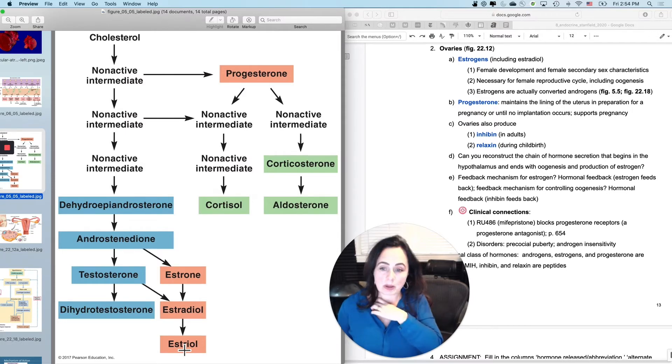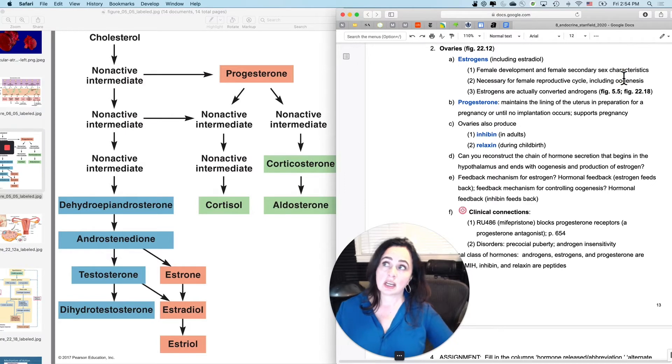The estrogens are responsible for female development and the development of female secondary sex characteristics. Estrogens need to be present during fetal development in order for the female ducts to continue their development into the uterine tubes or oviducts and the uterus. Secondary sex characteristics are the things that change in a girl as she goes through puberty. You have breast development, increase in height, change in body fat deposition around the hips and legs and breast. You have axillary hair growth and pubic hair growth, and the maturation of the female reproductive tract.